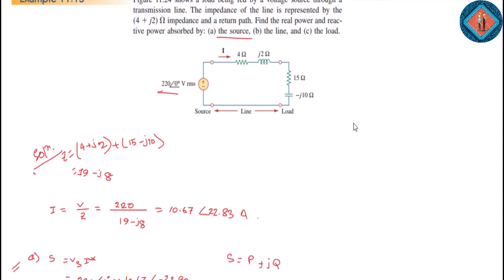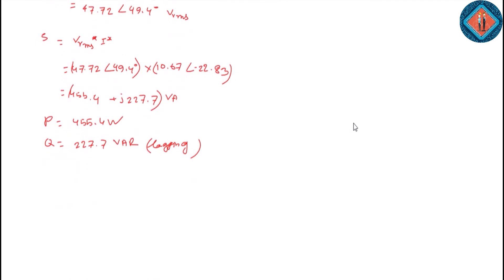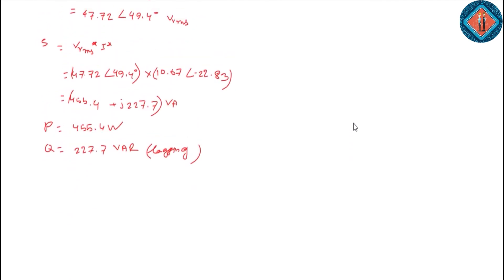Then the load is 15 minus j10. The load current is 10.67 at an angle 22.83. Then let's compute the load voltage drop.